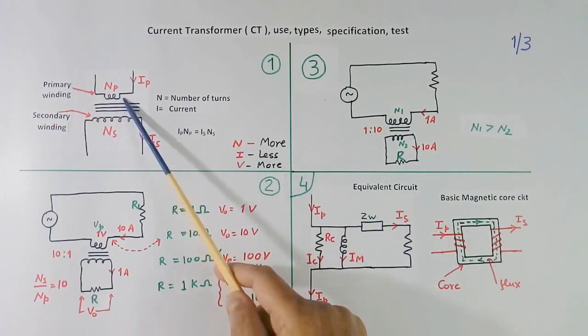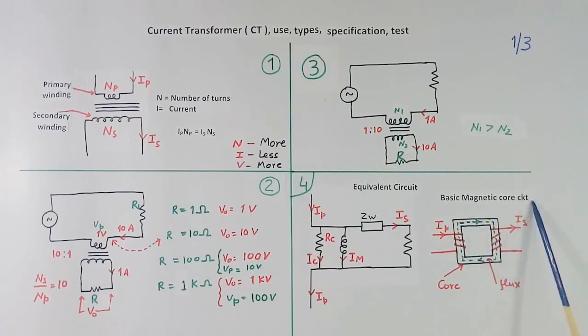This is equivalent circuit of the CT. And this is basic magnetic core circuit. This is core. And this is primary winding, this is secondary winding. This is primary current, secondary current. When current flows in this, some flux has to flow. Otherwise you will not get current here. This flux requires some magnetizing current. That is called IM. That I have shown here. And there will be loss in this core. That equivalent of that loss is shown here. Rc, resistance core. It is equivalent or current flowing IC, core current, core loss current.